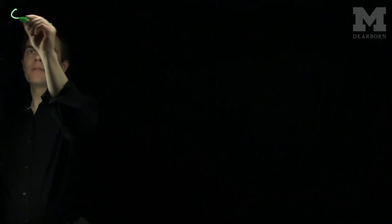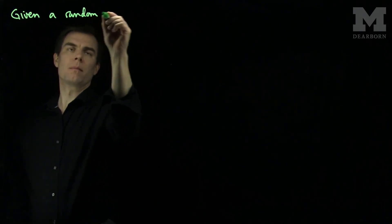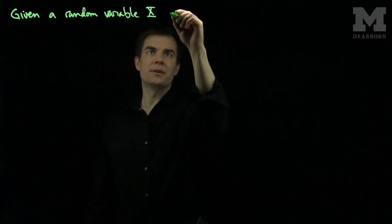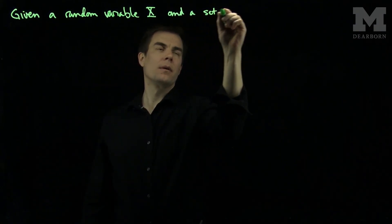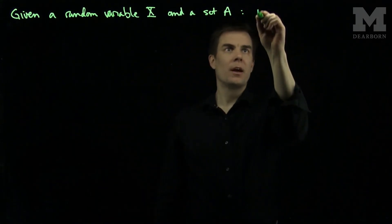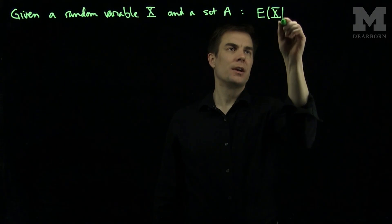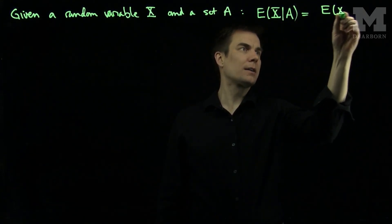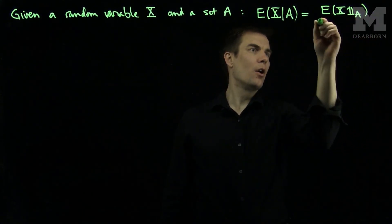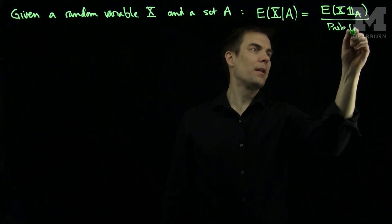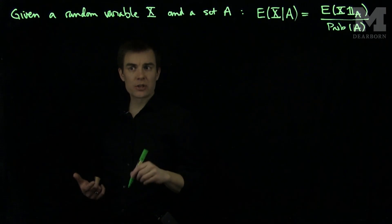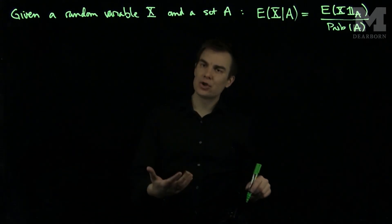Conditional expectations: given a random variable X and the set A, we have the following formula. The conditional expectation of X given set A is the expected value of X on the set A over the probability that A occurs. I can take this definition of conditional expectation of a random variable with respect to a set and generalize it.